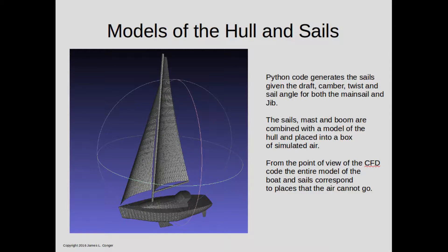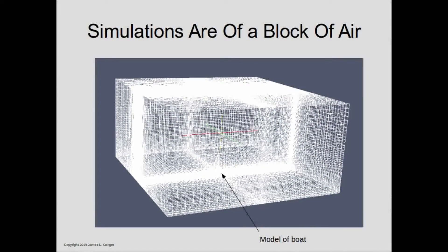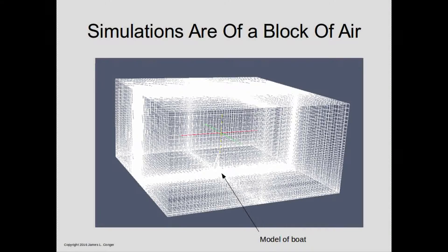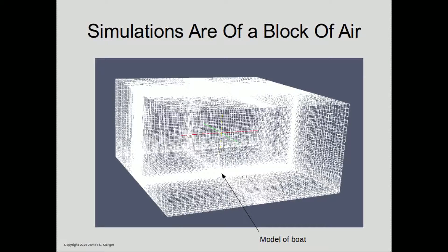CFD models start with a physical model of the object being simulated. In this case, the model of the hull, including the keel and rudder, was combined with a model of the sails that was generated programmatically, so that the shape of the sails and the angle to which they were set could be adjusted very precisely. From the point of view of a fluid mechanics model, the materials the boat's made of don't matter — the model just represents places where the fluid can't go. The solid model is then placed into what amounts to a gigantic simulated box of air, or in the case of a hull model, air and water.